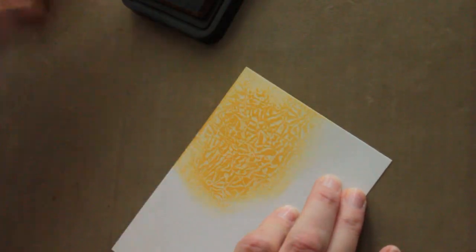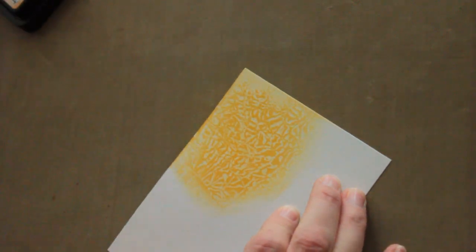Then you can use a brayer or a blending tool and apply some ink. Here I'm using Wild Honey from Distress Ink from Ranger.